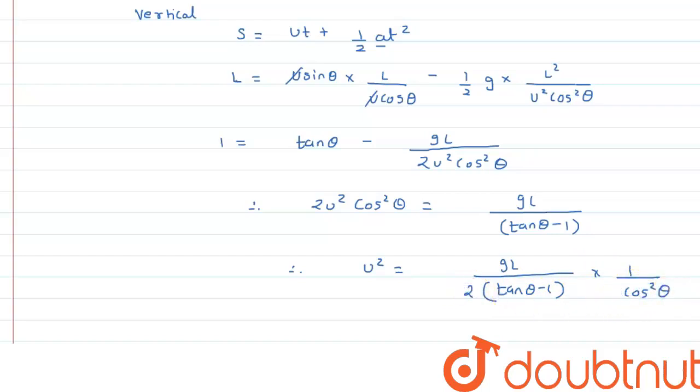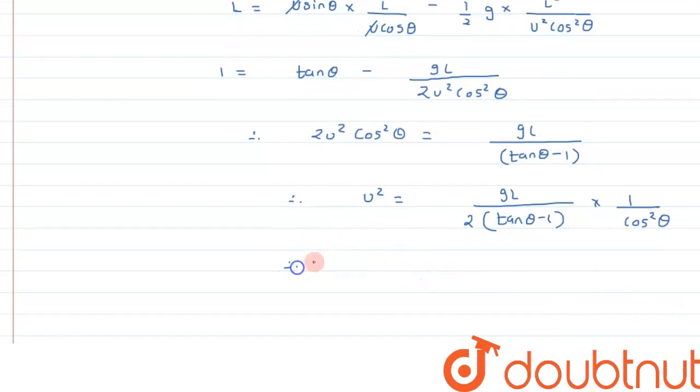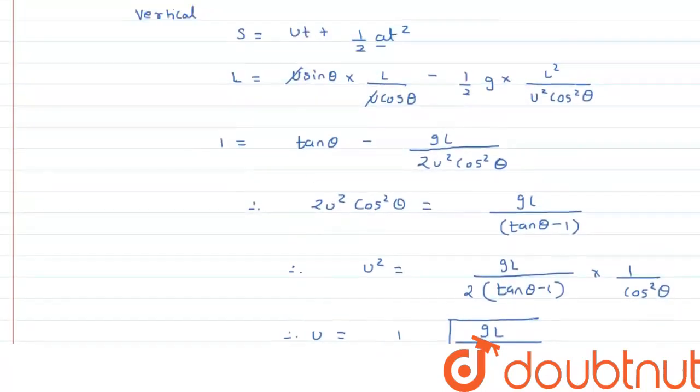2 cos squared theta. So this result finally leads us to u will be equal to 1 over cos theta under root of gL upon 2 tan theta minus 1. So this is the final expression for velocity we are getting, or initial velocity we are getting, and this matches with option B.